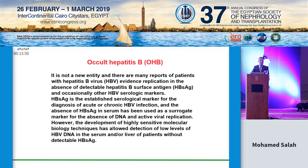Occult hepatitis B is not a new entity. There are many reports of patients with hepatitis B virus evidence of replication in the absence of detectable hepatitis B surface antigen and occasionally other serological markers. Hepatitis B surface antigen is the established serological marker for diagnosis of acute or chronic infection; however, the development of highly sensitive molecular biology techniques has allowed detection of low levels of hepatitis B virus DNA in the serum and/or liver of patients without detectable hepatitis B surface antigen.